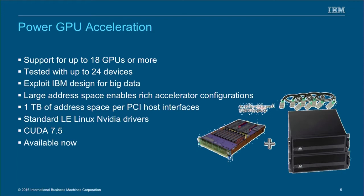For GPU acceleration with NVLink, we support up to 18 GPUs or more. We have tested this with up to 24 devices — 12 K80s. We exploit the IBM design for big data, and the key is that we are able to address a very large addressable space, which enables rich accelerator configurations. Our address space is one terabyte per PCI host interface, which is larger than anything else available. Standard Little Endian Linux and NVIDIA drivers are available, and it supports CUDA 7.5, available now.